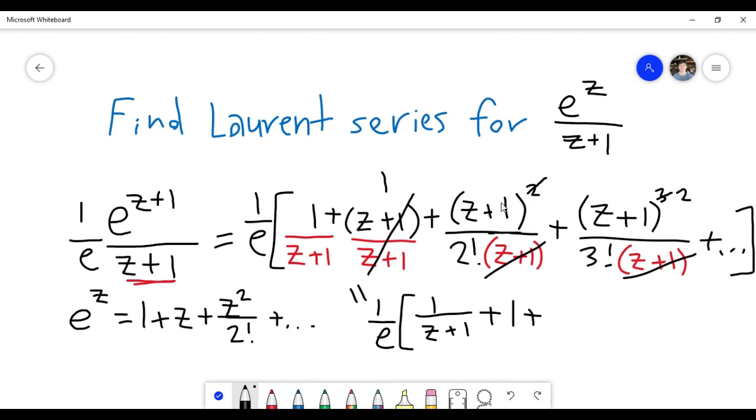And then I have a bunch of powers of z plus 1. And notice that whenever I have a power of z plus 1, I'm basically dividing by one more than that number factorial. So here I have z plus 1 to the 1st power, after I canceled the z plus 1, but I'm dividing by 2 factorial.